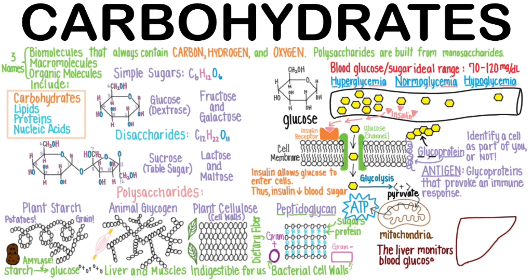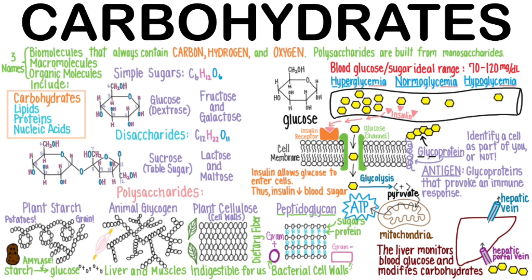The liver monitors blood glucose levels in the blood. Glucose is absorbed from the intestine and then it immediately enters the liver through the hepatic portal vein. The liver allows just the right amount — ideally about 100 milligrams per deciliter — to exit the liver and return to the circulation through the hepatic vein. The liver modifies carbohydrates by storing or releasing glucose in order to keep blood sugar steady. If excess glucose was in the meal, then the liver stores the excess glucose as glycogen in a process called glycogenesis. Whenever you see 'gen' or 'genesis' on a term, it means to build or make something new.